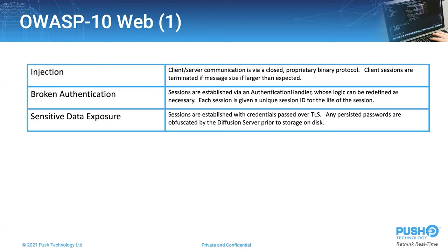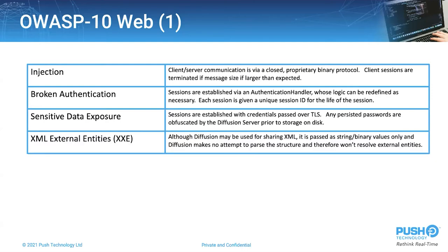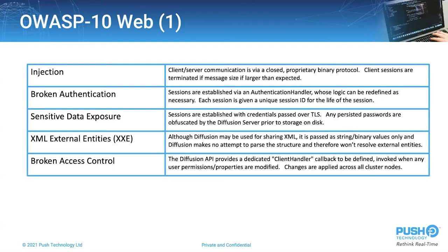Sensitive data exposure: all Diffusion sessions share data over TLS securely, and there are no persistent passwords in plain text and nothing sensitive logged to disk. XML external entities: although Diffusion can be used for sharing XML content, there is no attempt to resolve the content, so therefore there is no exposure to XML external entities. Broken access control: the Diffusion API provides a dedicated client handler callback which is invoked any time that user permissions or properties are modified.